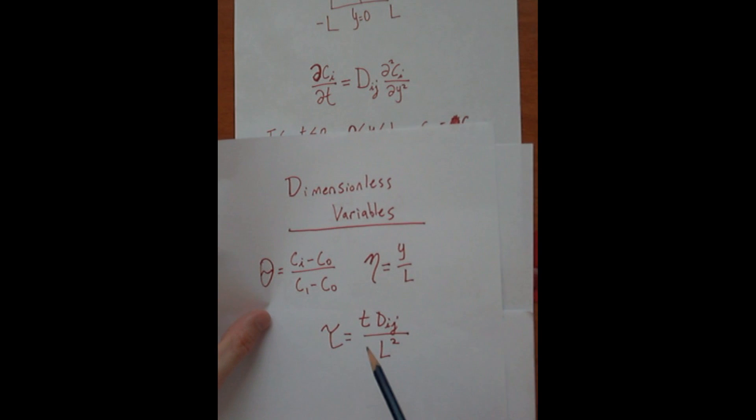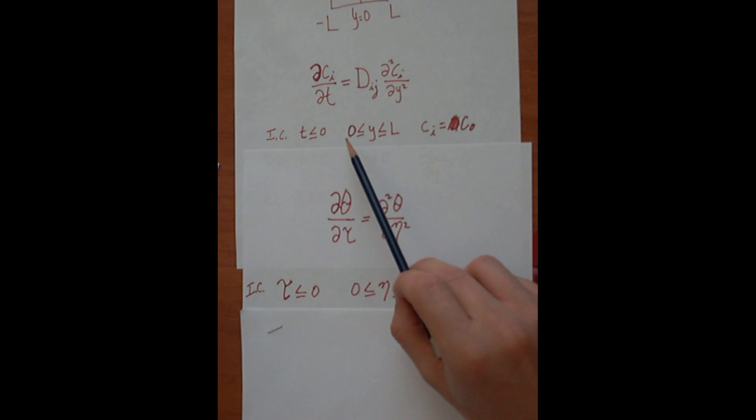if you plug in zero right here, tau would also be equal to zero. So from zero to L for our Y, for eta, it's going to be from zero to one.